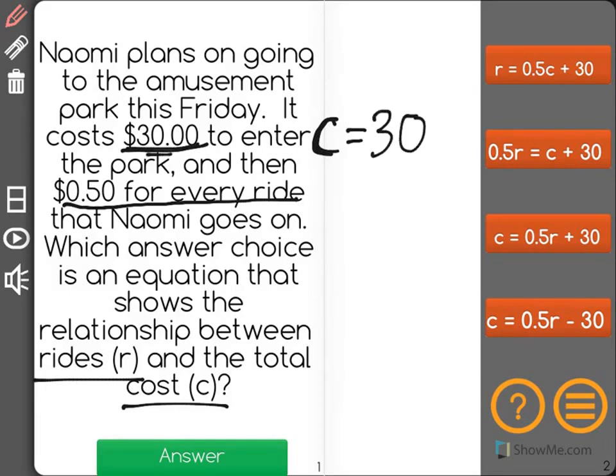So think of it. You go to the park, you want to know the total cost. You pay $30 to get in, and then you also have to pay $0.50 for each ride.